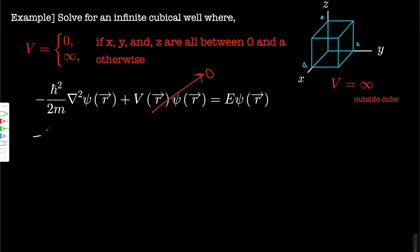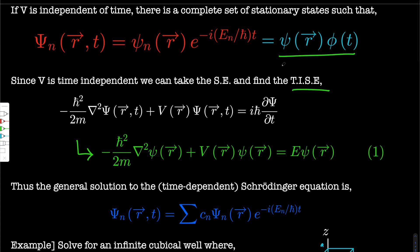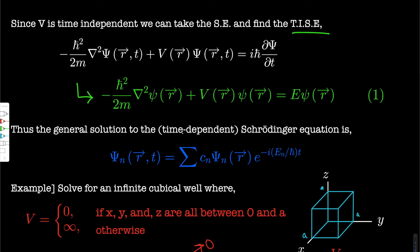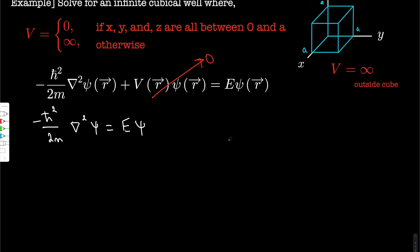Inside the cube, V is zero, so we lose that term from the Schrödinger equation. We get minus h-bar squared over 2m times the Laplacian of psi equals E psi. Just as we multiplied two functions together to get psi earlier, we're going to attempt the same process here to solve this PDE — it's very common to do when solving PDEs. So we let psi equal X(x) times Y(y) times Z(z).